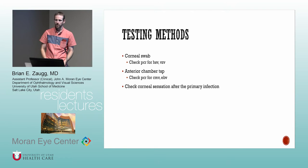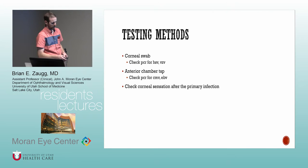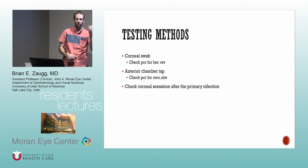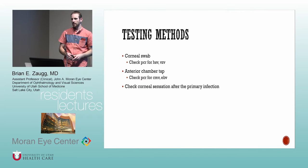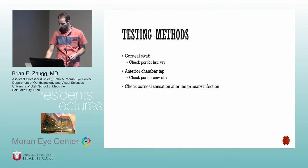To test for herpes, swab and send for PCR — don't try to culture viruses, as PCR is much more sensitive. For CMV and EBV, you may need an anterior chamber tap. Checking corneal sensation helps identify viral etiology, since few things cause damage to corneal nerves leading to neurotrophic keratitis. Check corneal sensation on subsequent exams to monitor fifth cranial nerve status.